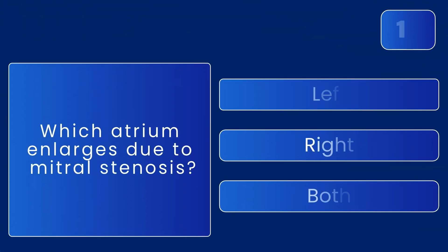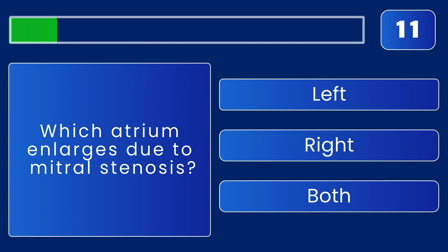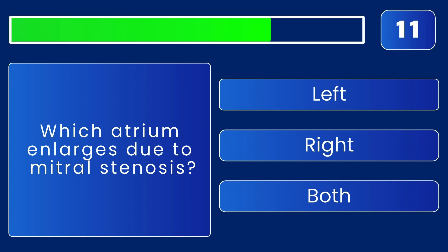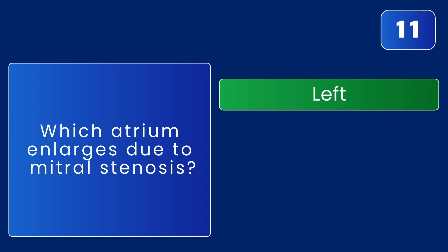Which atrium enlarges due to mitral stenosis? It's the left atrium — the obstruction causes back pressure.